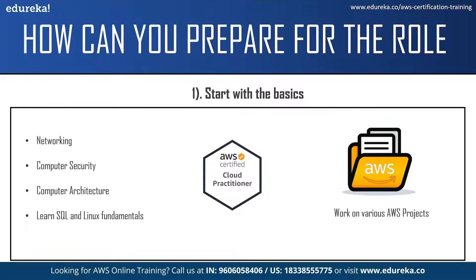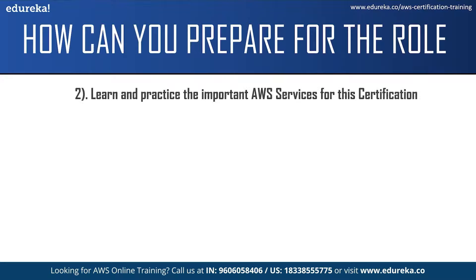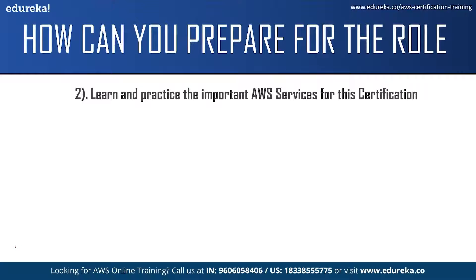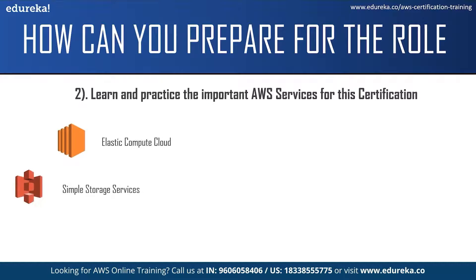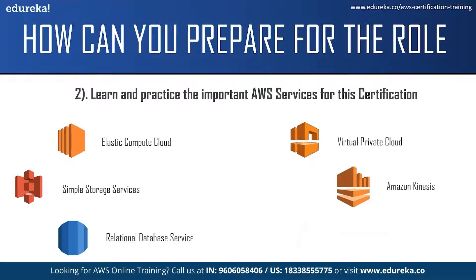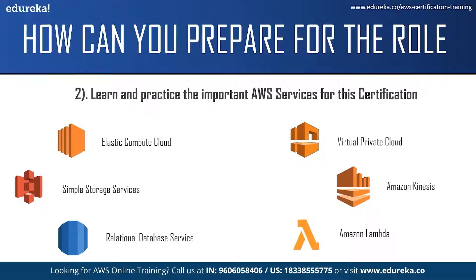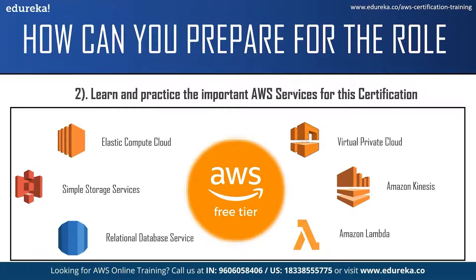The next step would be working on AWS projects. You can work on projects on different services — start with the easier projects initially and then move on to the difficult ones. You can find some good projects on Amazon Web Services' official website. The next step is learning and practicing the important AWS services for the certification. Some of the important services are Elastic Compute Cloud, Simple Storage Service, Relational Database Service, Virtual Private Cloud, Amazon Kinesis, and Amazon Lambda. You can practice some of the services using an AWS free tier account.